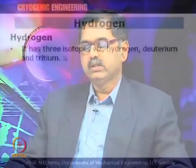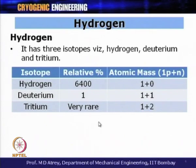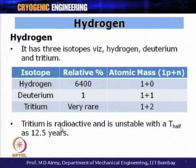Hydrogen has three isotopes: hydrogen (protium), deuterium, and tritium. The relative percentage of existence of hydrogen to deuterium is 6400 to 1. All three have one proton in the nucleus; the number of neutrons varies — hydrogen has 0 neutrons, deuterium has 1, and tritium has 2. Tritium is a very rare substance, is radioactive, and unstable with a half-life of 12.5 years, so it is not normally used in commercial operations.